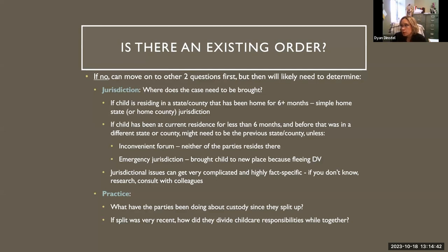If there is no existing order, you may want to move on to the other two big questions first, but then you may need to ask some more questions to determine preliminary matters, one of which is jurisdiction. If there is no existing order, you need to figure out where the case needs to be brought. If your client, the other party, and the child are all residing in the same county, that's easy. If the child has been residing in the same county for the past six months, that's going to be a simple determination — that is their home state or home county.